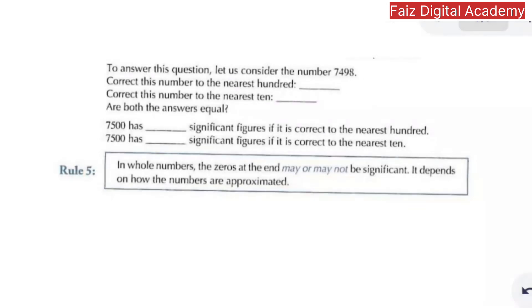The fifth rule to determine whether a number is significant or not is: in whole numbers, the zero at the end may or may not be significant — it depends on how the numbers are approximated.